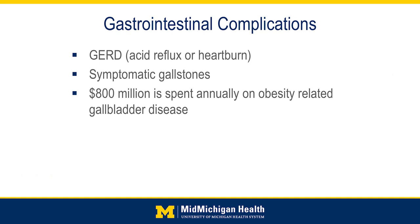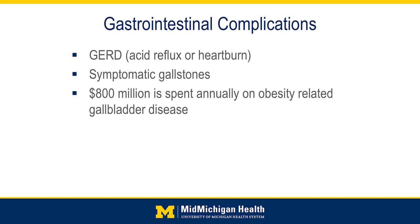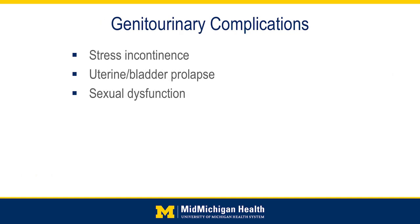Gastrointestinal complications include GERD — acid reflux or heartburn — which is very common in patients with obesity. The body is a pressure system: excess weight around the midsection exerts pressure on the stomach wall, overwhelming the muscle at the end of the esophagus that controls acid, allowing stomach acid to come up and cause heartburn. Gallstones and gallbladder disease are very common in patients with obesity — in this country we spend about 800 million dollars every year on obesity-related gallbladder disease.